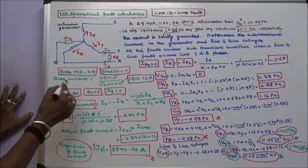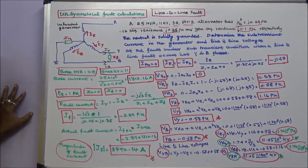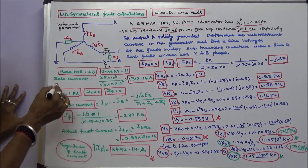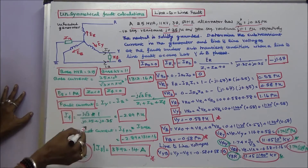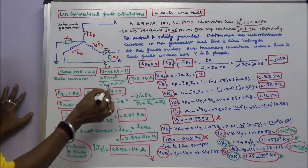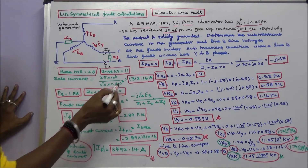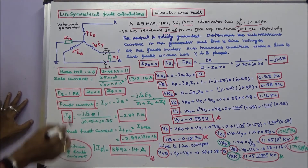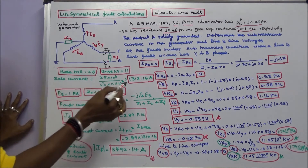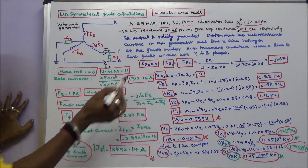We choose base MVA equal to 25, base KV equal to 11. We can find base current: that is equal to 25 into 10 power 6 divided by root 3 into 11 into 10 power 3. Base current is 1312.16 amps.